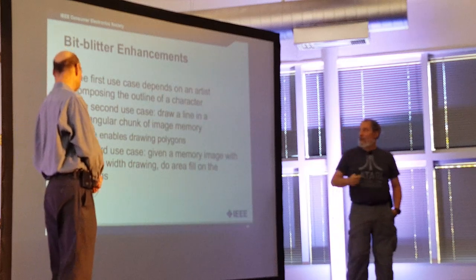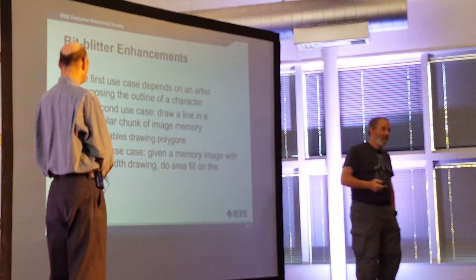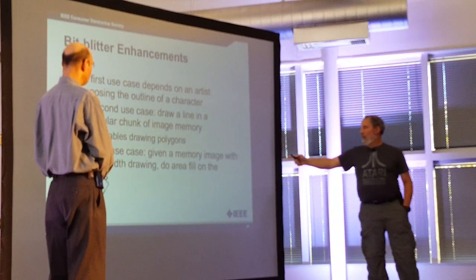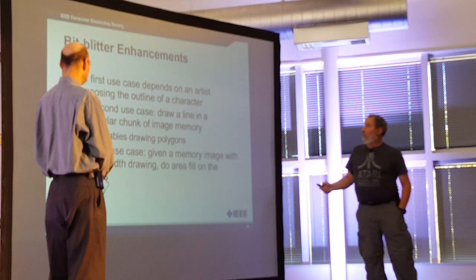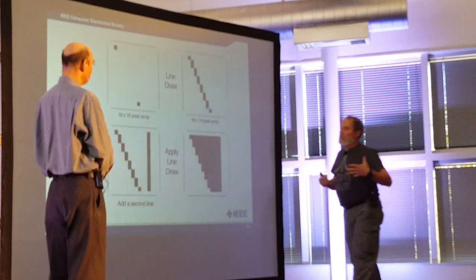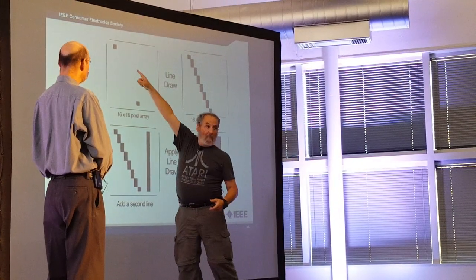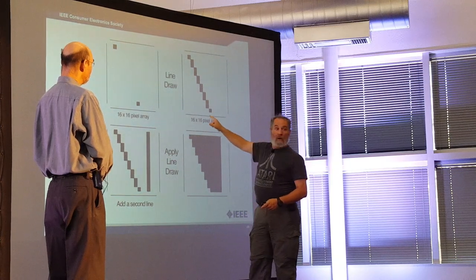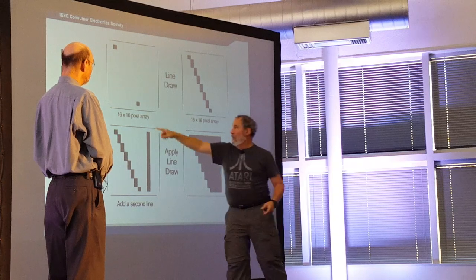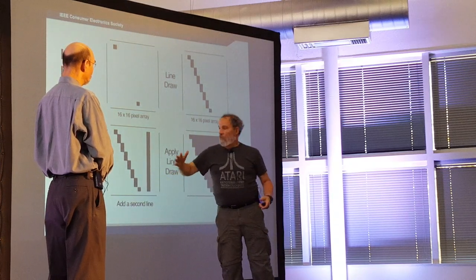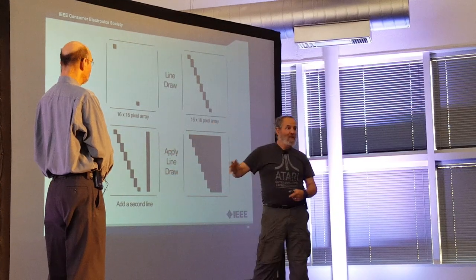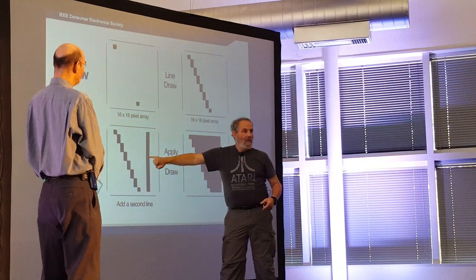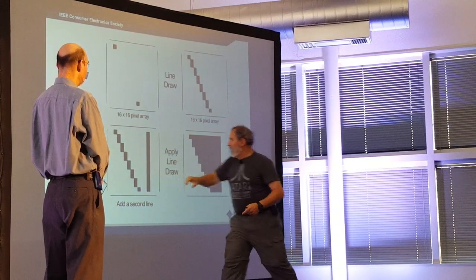First use case: compositing the outline of a character. Second use case: drawing lines and polygons with area fill. The blitter can be used to place endpoints, perform line draw, draw successive lines, and then feed that image into the area fill engine. The fill engine picks up each '1' bit and extends it until it hits another '1', then stops — turning a wireframe polygon into a filled shape.